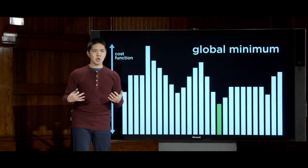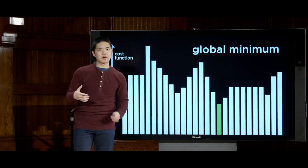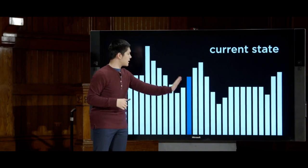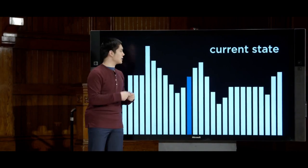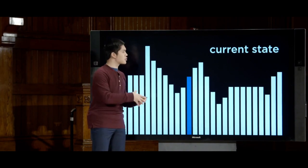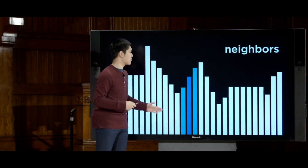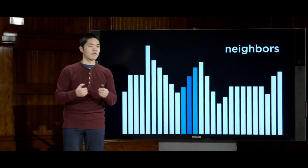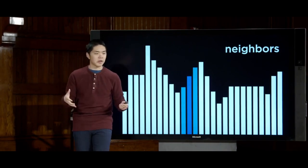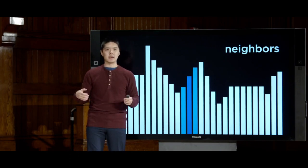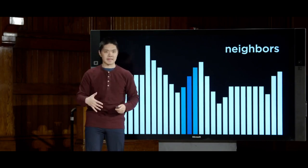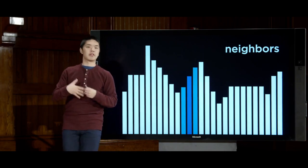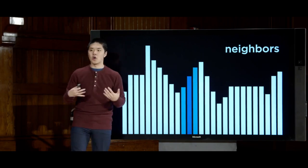In local search, we maintain just a single state — a current state inside a node — and then move to one of its neighbor states. For the hospital problem, a neighbor might be moving one hospital one space to the left, right, up, or down — some state close to our current state but slightly different, with a potentially different objective or cost function value.